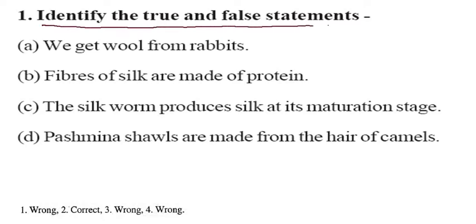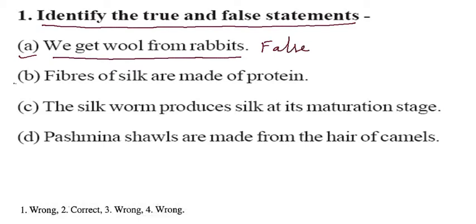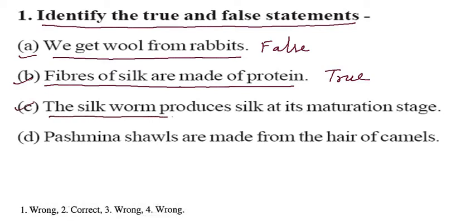Identify the true and false statements. First: we get wool from rabbits — that is a false statement. Second: fibers of silk are made of protein — that is true. Third: the silkworm produces silk at its menstruation stage — that is a false statement.